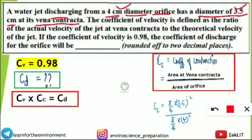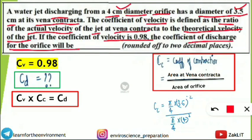The coefficient of velocity is defined as the ratio of the actual velocity of the jet at the vena contracta to the theoretical velocity of the jet — you can also skip this definition. The final statement asks: if the coefficient of velocity is 0.98, what is the coefficient of discharge for the orifice? So we need to find cd, and cv = 0.98 is given.